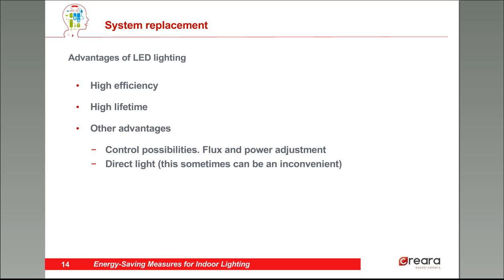The main advantages of LED lighting are high efficiency and high lifespan. But these are not the only benefits. There are other benefits such as control possibilities and adjustment possibilities, because LEDs can be adjusted down to 10% of power. There is also another benefit: directionality, direct light. But this, as we talked about last week, can also be an inconvenience because we can have the problem of glare.